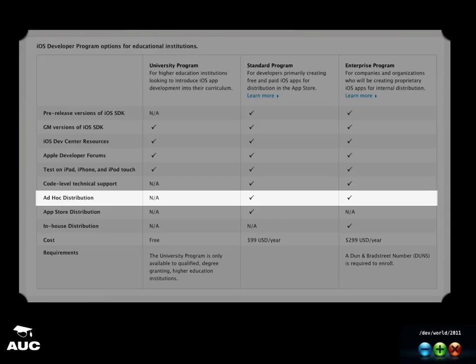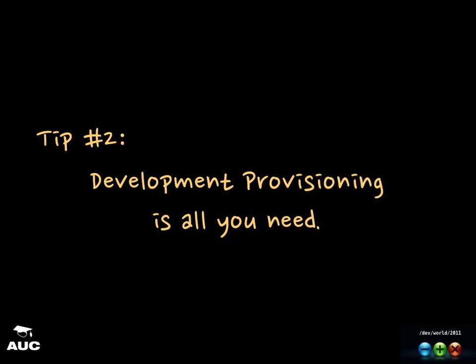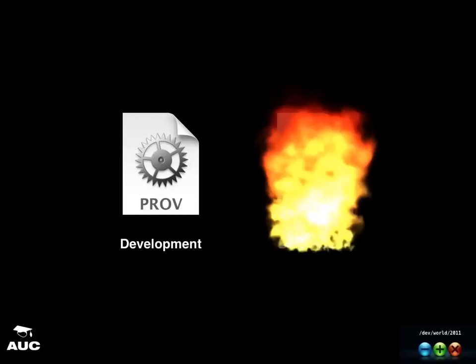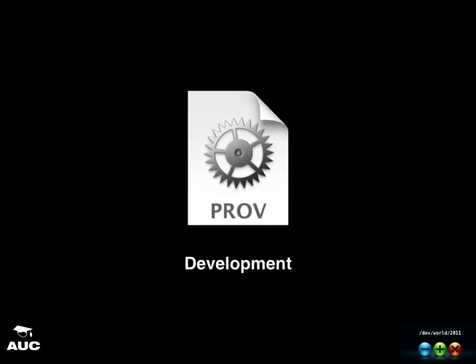This table explains the differences between iOS developer programs. We have a university program, which is free, a standard program, and an enterprise program. If you look closely, not all programs support ad hoc distribution — only those who paid. So if we have a university account, we can't do distribution? Tip number two: development provisioning is all you need. In fact, you only need to deal with one provision file — development — until you are ready to publish your app. I'll show you later how it works in the demo.